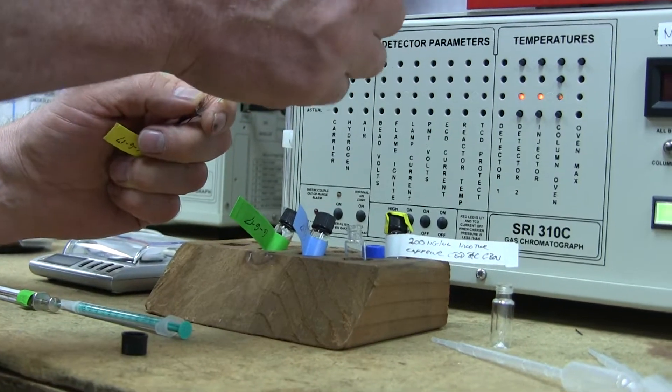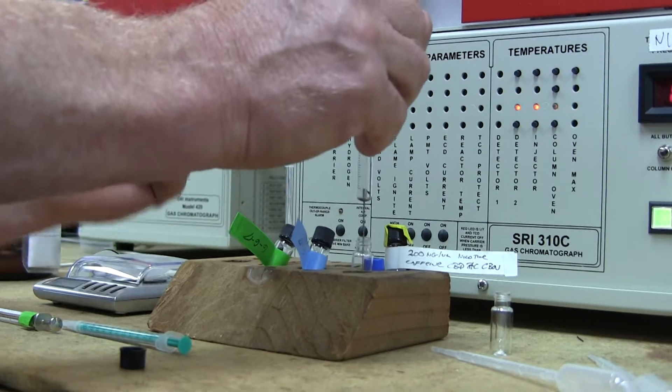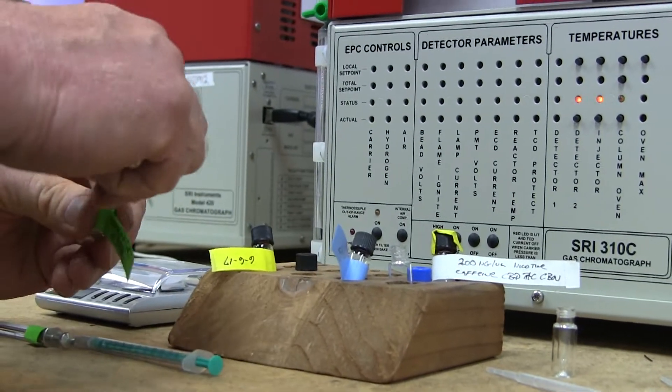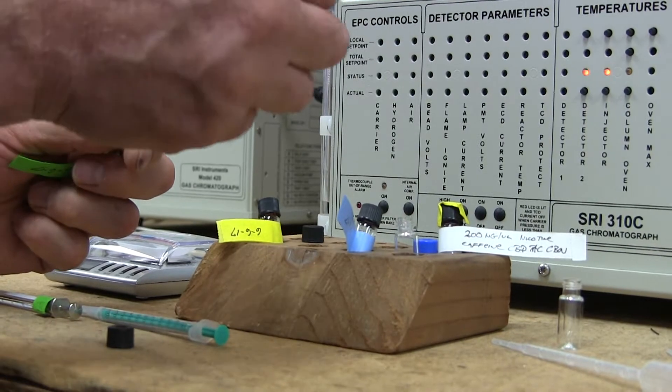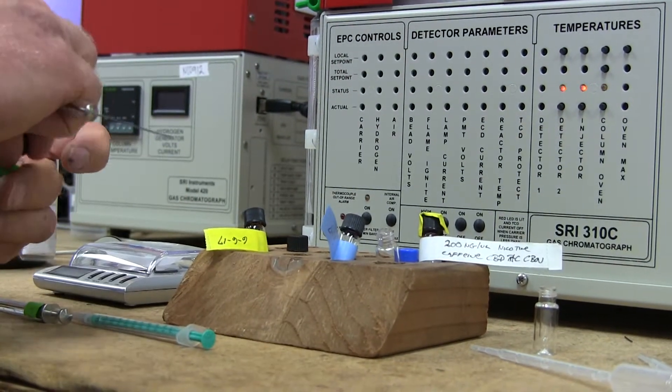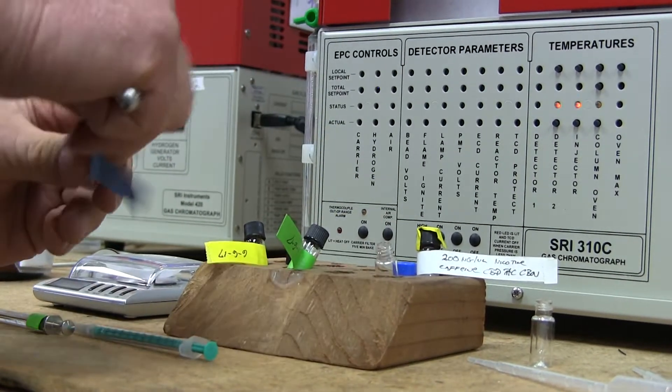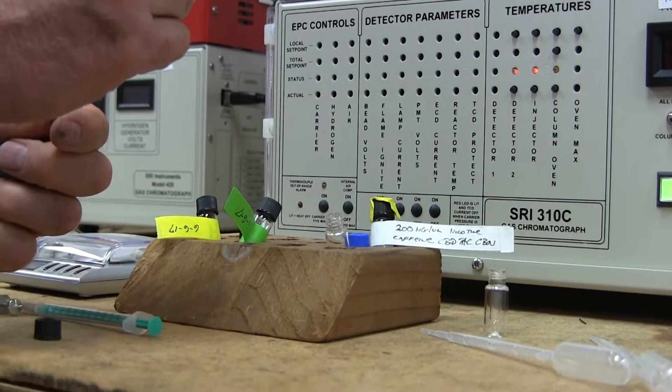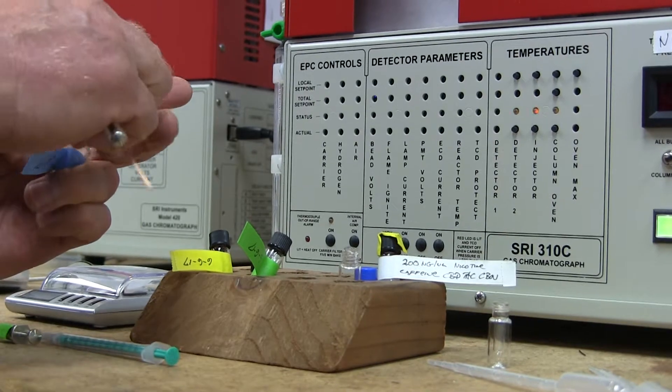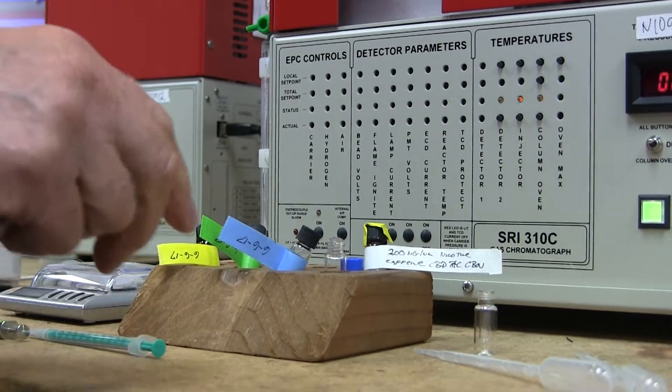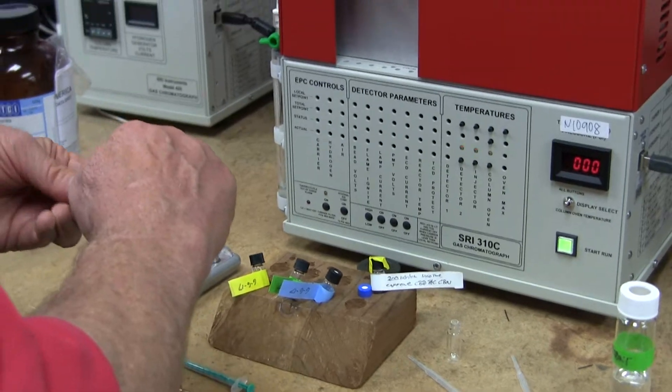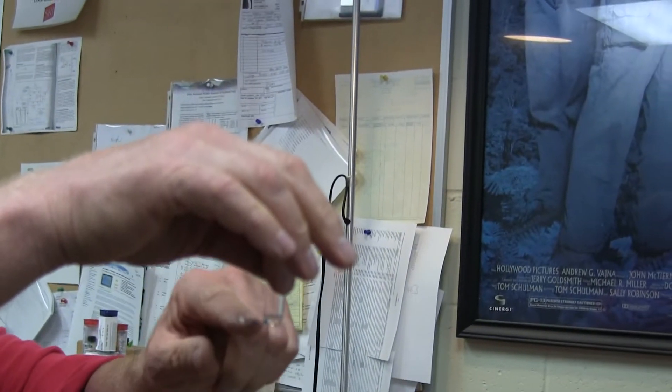So, what I'm going to do is I'm going to take 100 microliters of each one of these. So, here's the CBN, 100 microliters into the bottle, and then I'm going to take 100 microliters of the delta-9 THC, put that in the bottle, and then 100 microliters of the CBD into the bottle. So, because I mix the three together, even though each one originally was 1,000 nanograms per microliter, when I mix the three together, now the concentration becomes less, it becomes 333 nanograms per microliter.